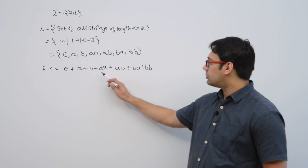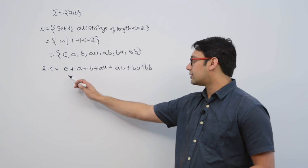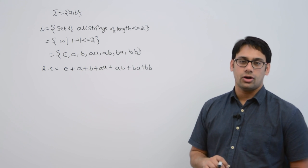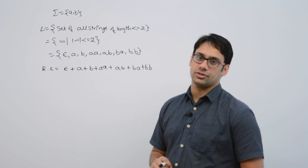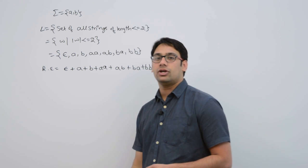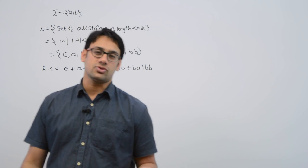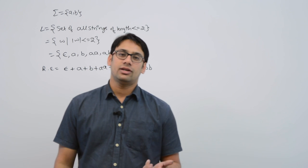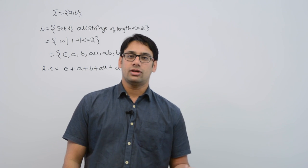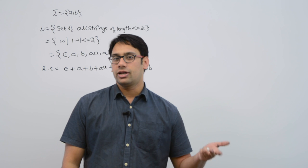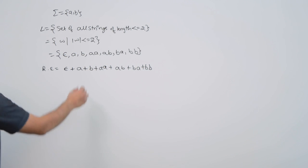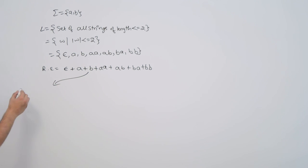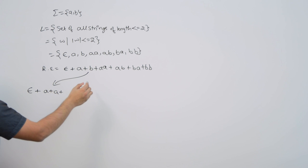When the number of strings is finite, you can represent it explicitly like this, or you can make a shorter representation of the same language. The same language can be represented by two or three different representations. That means for any given language, more than one regular expression representation is possible. So how can we represent it differently? The first representation can be: epsilon + a + b.